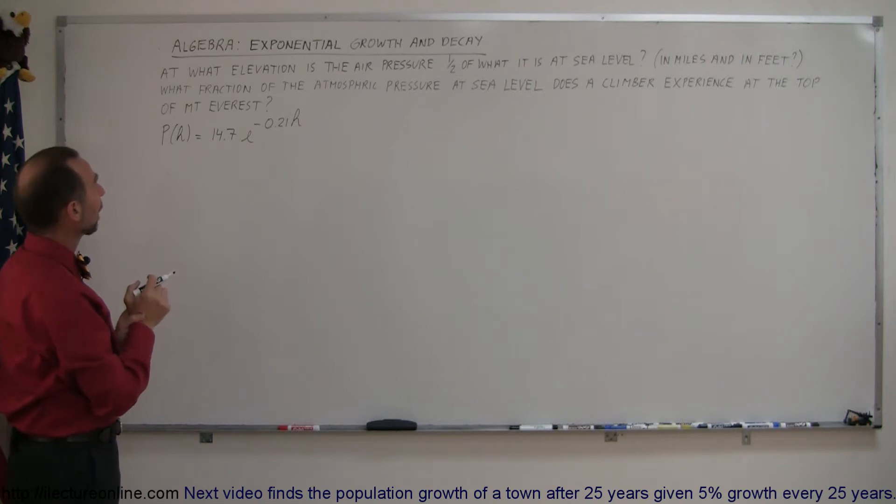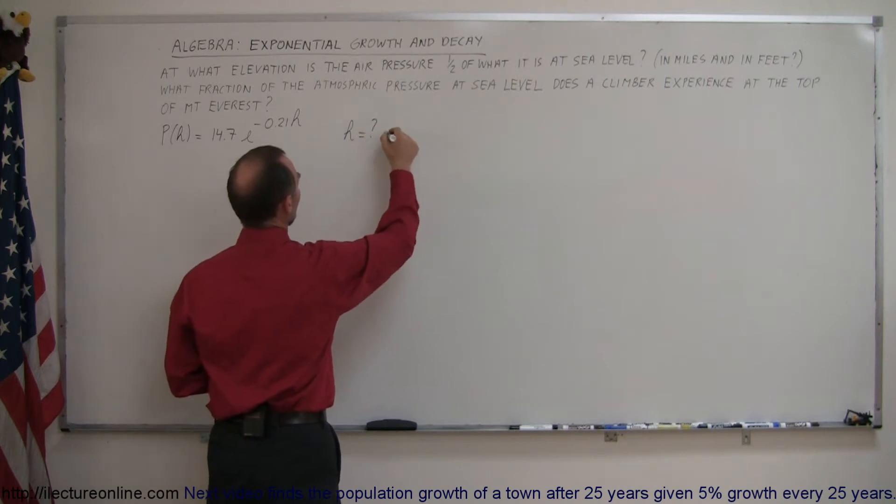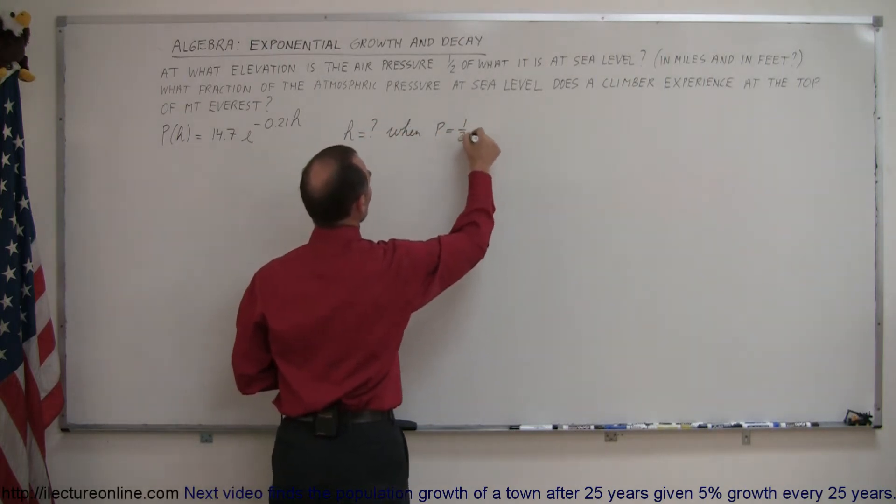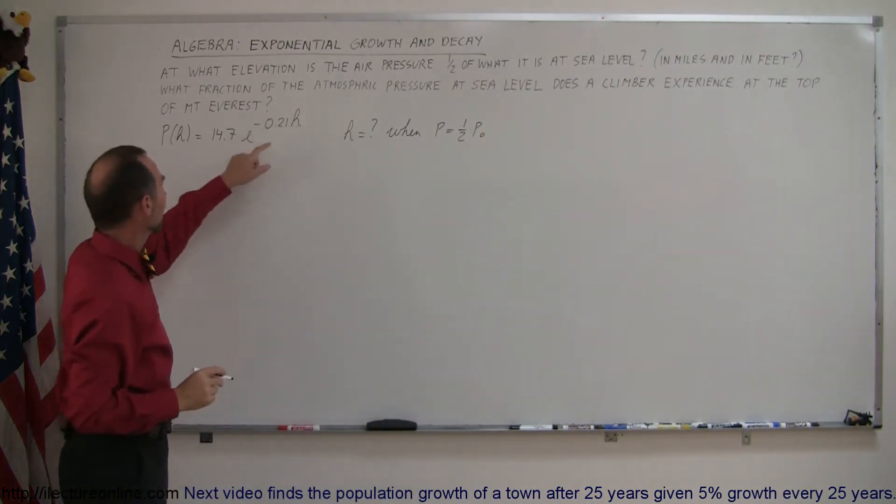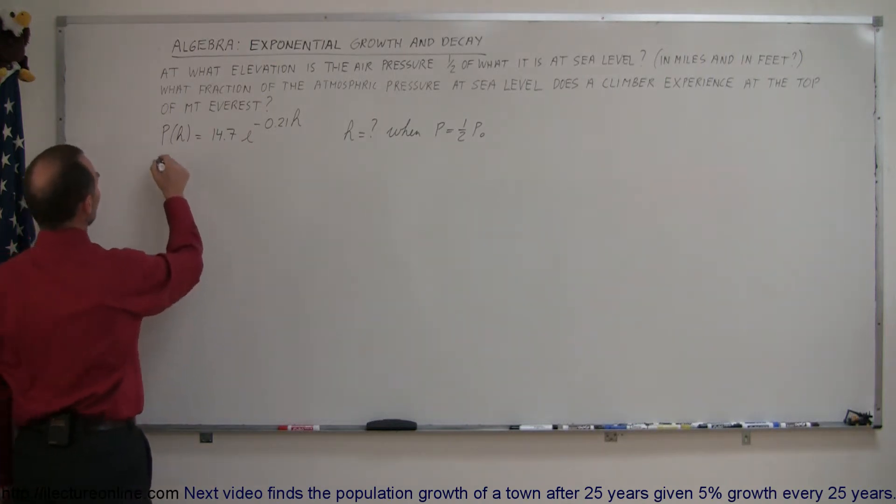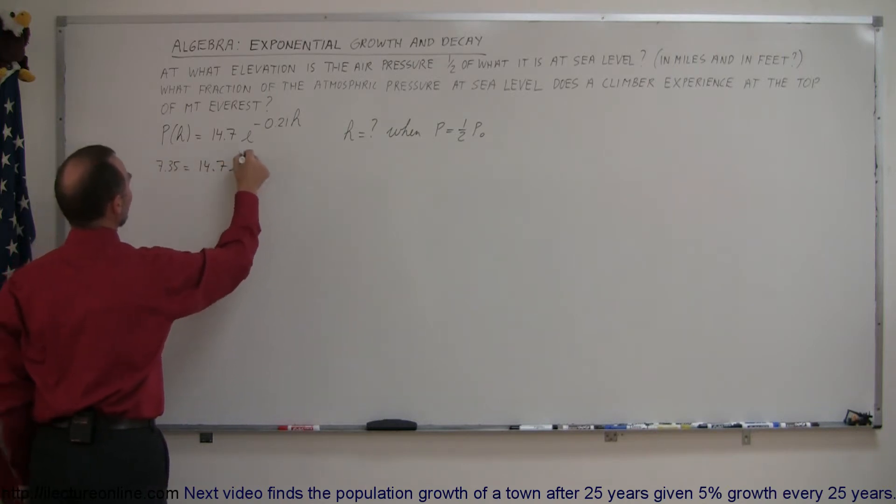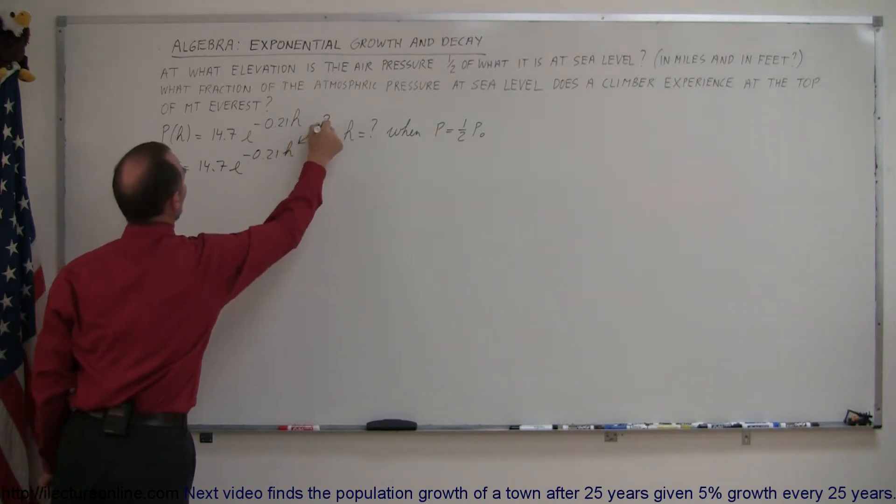Let's start with the first problem. At what elevation is the air pressure one-half? We're looking for H when the pressure is half the original pressure. So half of 14.7 is 7.35, giving us 7.35 = 14.7e^(-0.21H), and H is what we're looking for.